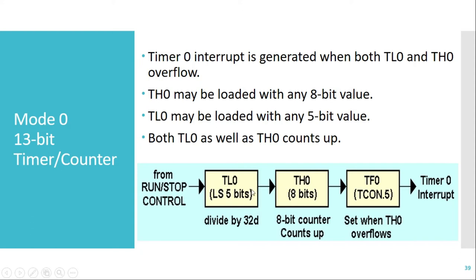We can load any five-bit value into TL0 and counting starts from that value. Whenever TL0 reaches its maximum limit — all five bits become 1 — and one more clock pulse is given, TL0 rolls back to 0 and TH0 is incremented by 1. Whenever TH0 reaches its maximum value FFh and one more clock pulse is given, TH0 overflows back to 00h, and the timer 0 overflow flag TF0 is set to 1 to indicate overflow, which can generate the timer 0 interrupt.